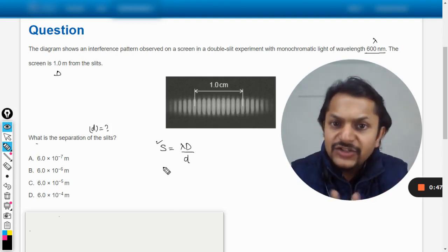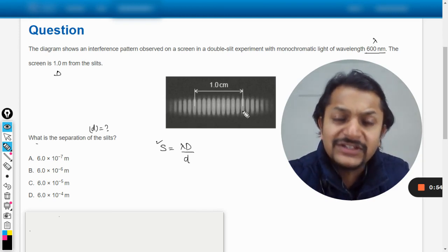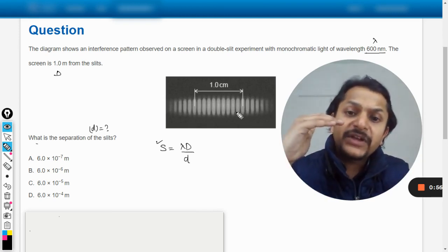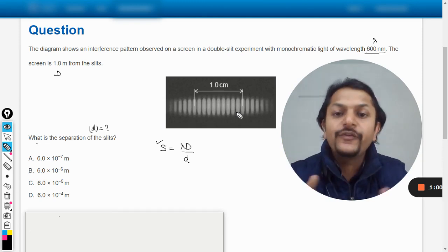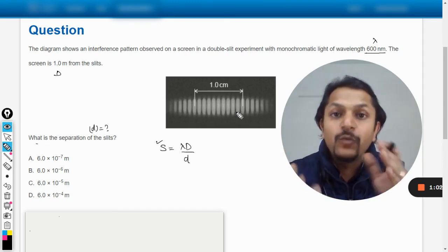So we have to find the spacing between the two slits, and that is not going to change. The distance of one centimeter is given. There are so many of the slits that have been contained in one centimeter. So to find the fringe spacing, we have to find the total number of fringes. We will divide one centimeter with the number of fringes to find the fringe spacing.